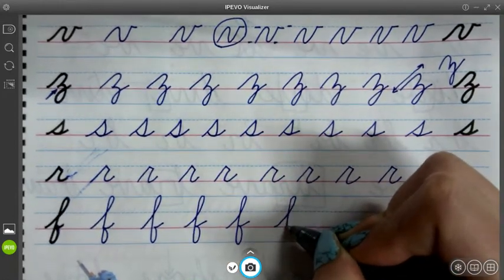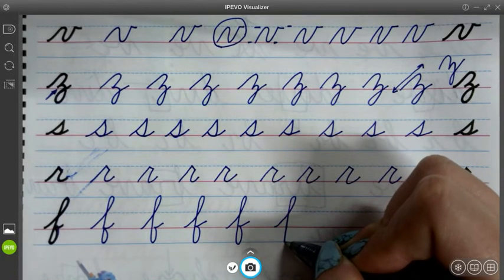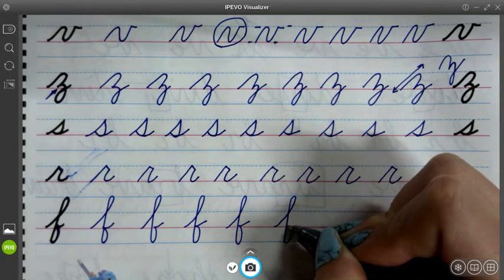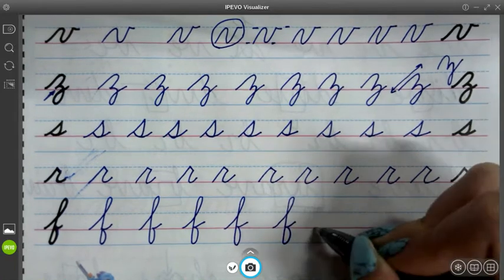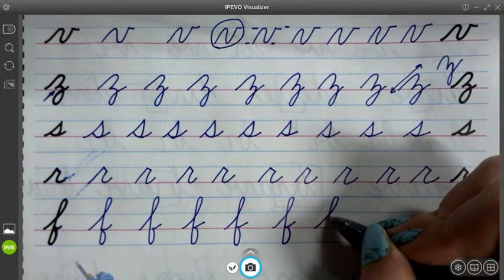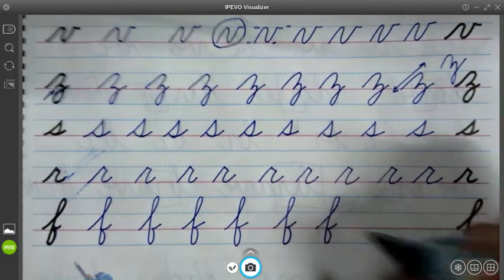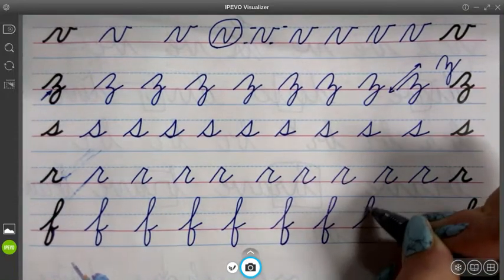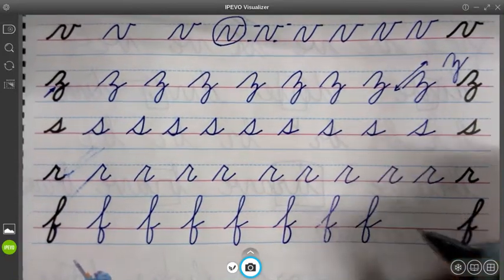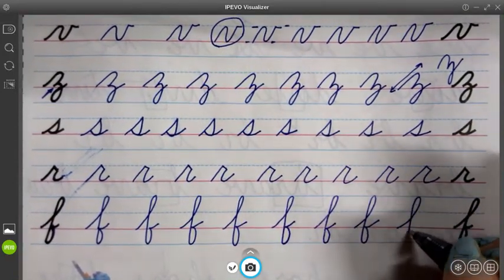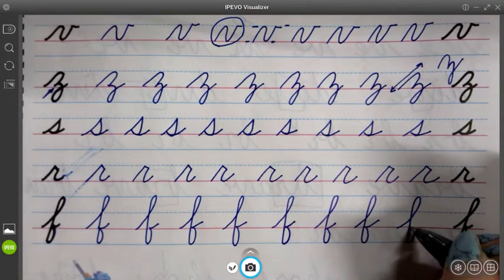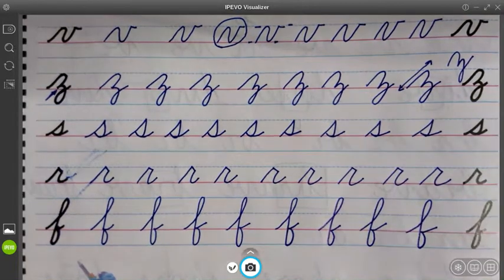L, down to the bottom blue, back around like a Q, and then out. Remember, we don't loop around like we do with a Z or a Y. We go straight back up to the right, touch at the red, and our tail comes out.